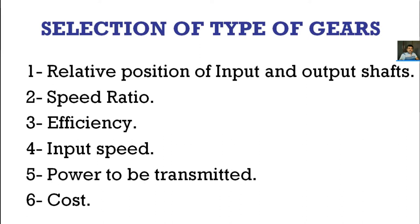The fourth factor is the input speed — the driving speed of the driving shaft from where the power is transmitted to the output end. The fifth factor is the power to be transmitted: whether it is a high power transmission application, a medium drive, or a low power transmission drive. The magnitude of the power to be transmitted from the driving shaft to the driven shaft must also be considered when selecting the type of gear for the given application.